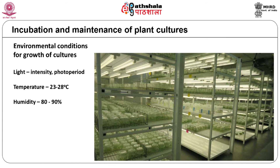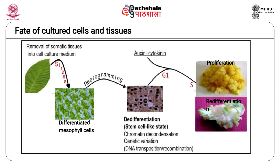The cultures are also grown under high humidity conditions to prevent desiccation of the fragile tissues. When plant cells or tissues which are in a differentiated state are placed on a culture medium, they undergo developmental reprogramming since the hormonal gradients existing in natural conditions are perturbed. First, the cells de-differentiate to attain a stem cell-like or meristematic state. The cells in this state are isodiametric, thin-walled and have prominent nuclei, and show rapid cell division.